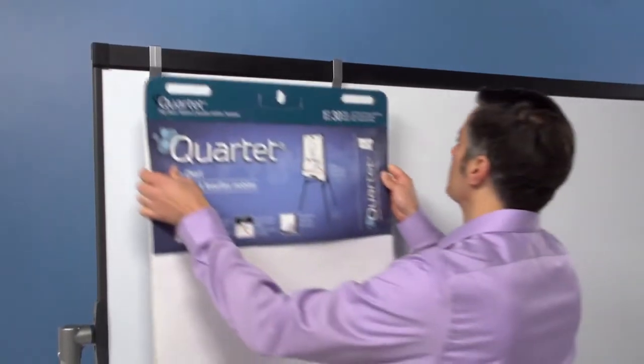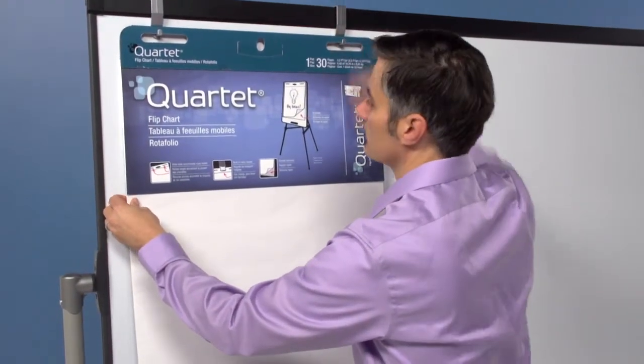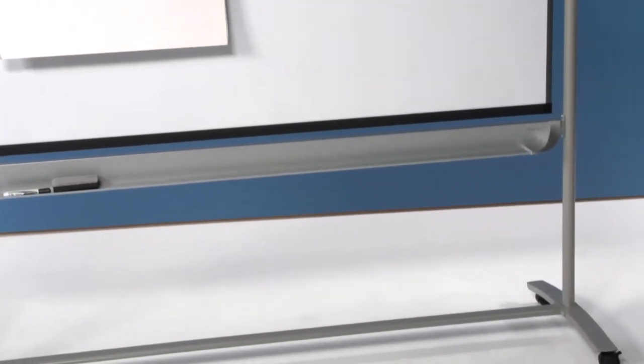This surface is large enough to accommodate any size flip chart, and repositionable pad hooks can handle virtually any brand of charts. The full-length accessory tray provides storage.